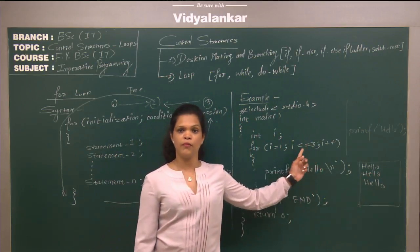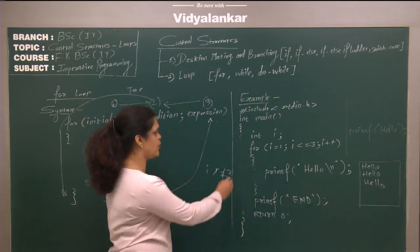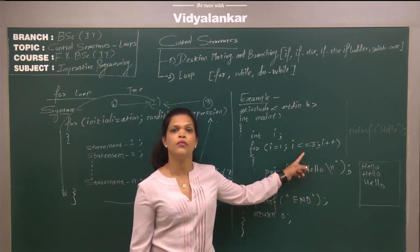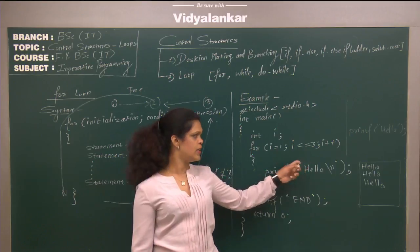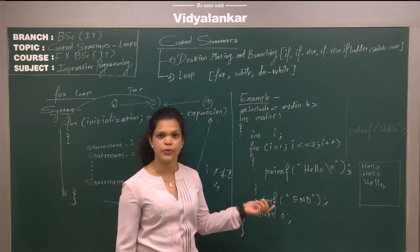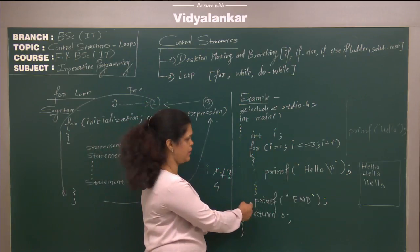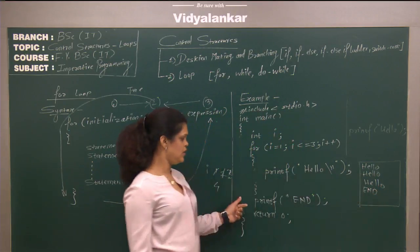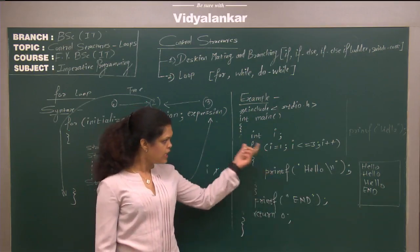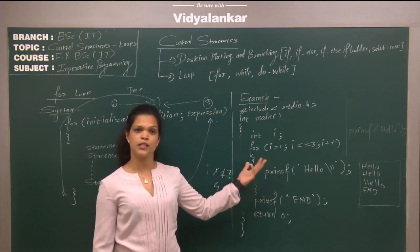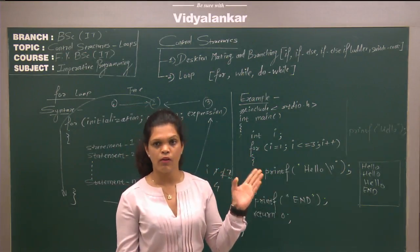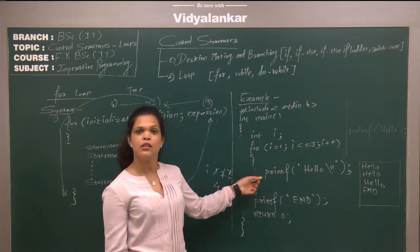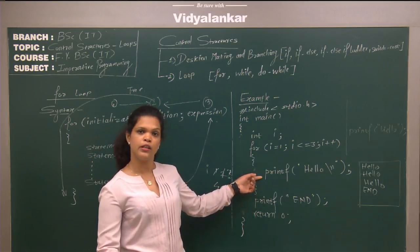We go back to the for loop and perform the increment operation on i. The new value of i is four. Is four less than or equal to three? This time the condition is false. If the condition is false, it breaks the execution of the for loop. The execution control comes out of the for loop and executes the following statement, printf n, displaying n on the output screen. The for loop has executed three times for three values of i: one, two, and three. So instead of writing the printf statement three times, we wrote it only once inside the for loop and executed it three times.